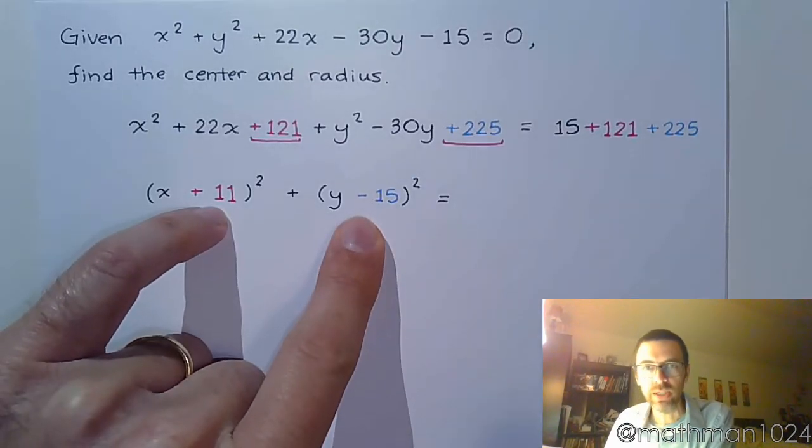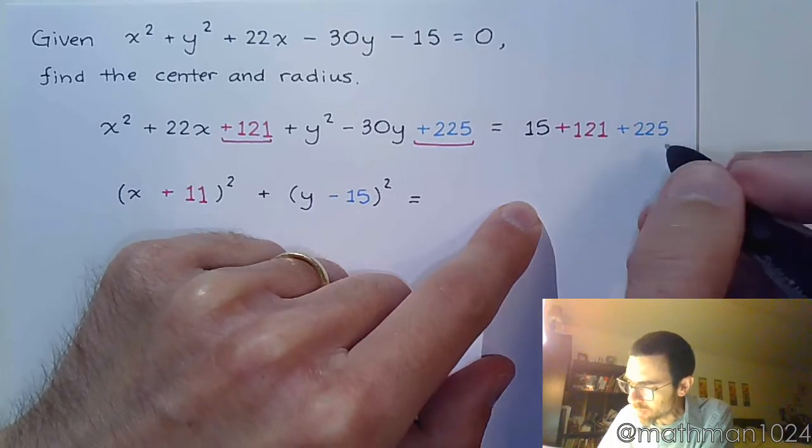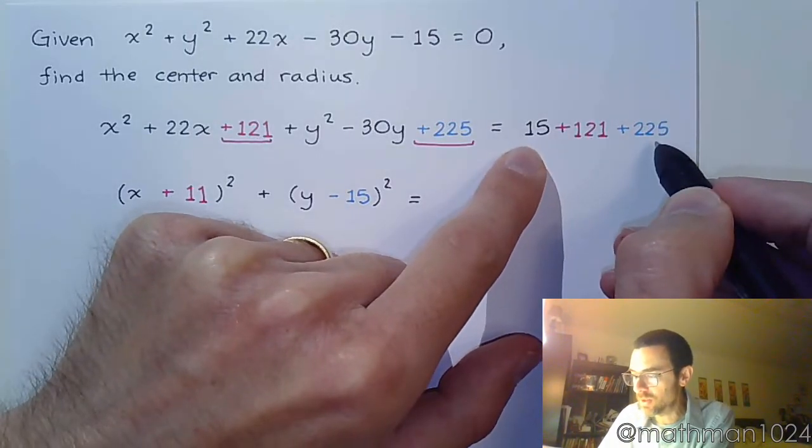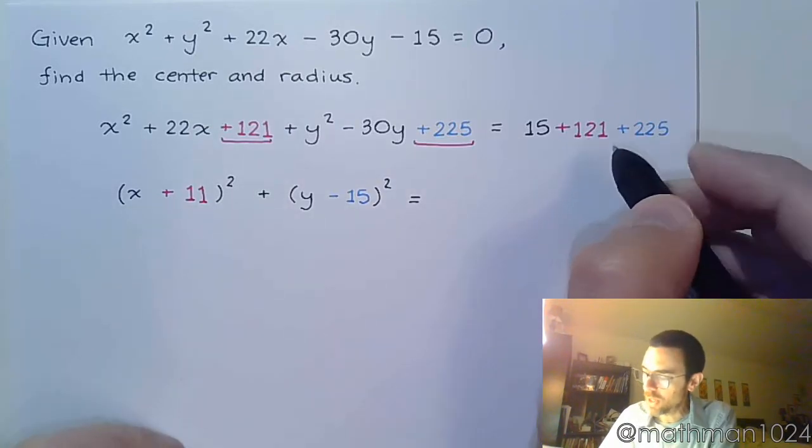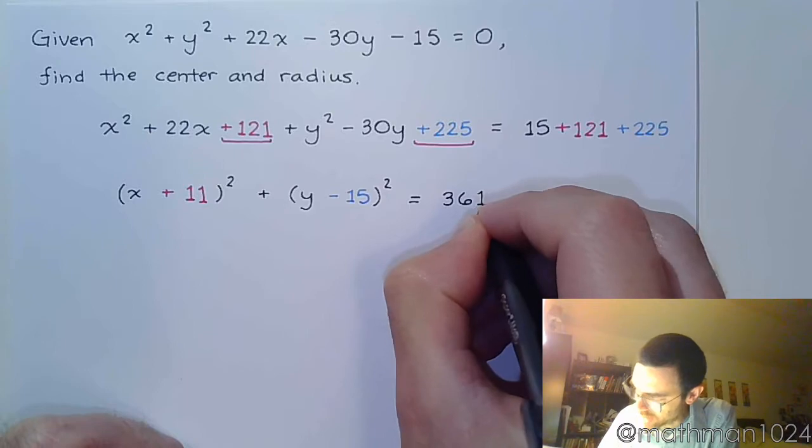Alright, so these are good. And on the right side, let's see what we have. When we combine everything, 225 and 15 is 240, and 240 and 121 is 361.